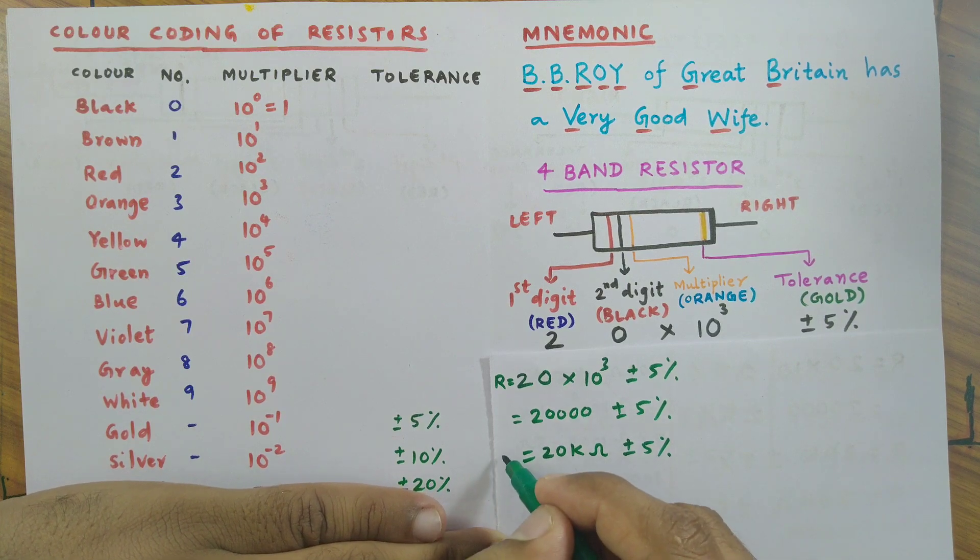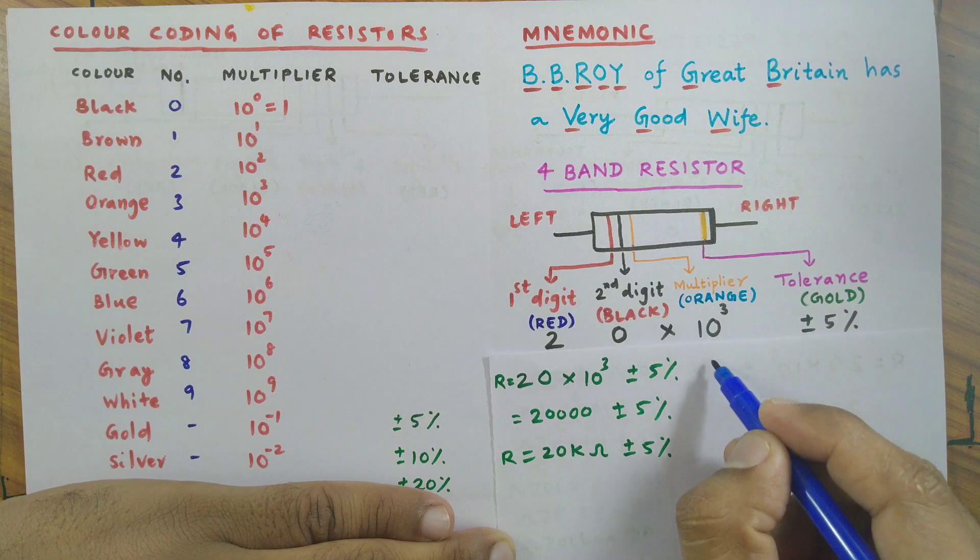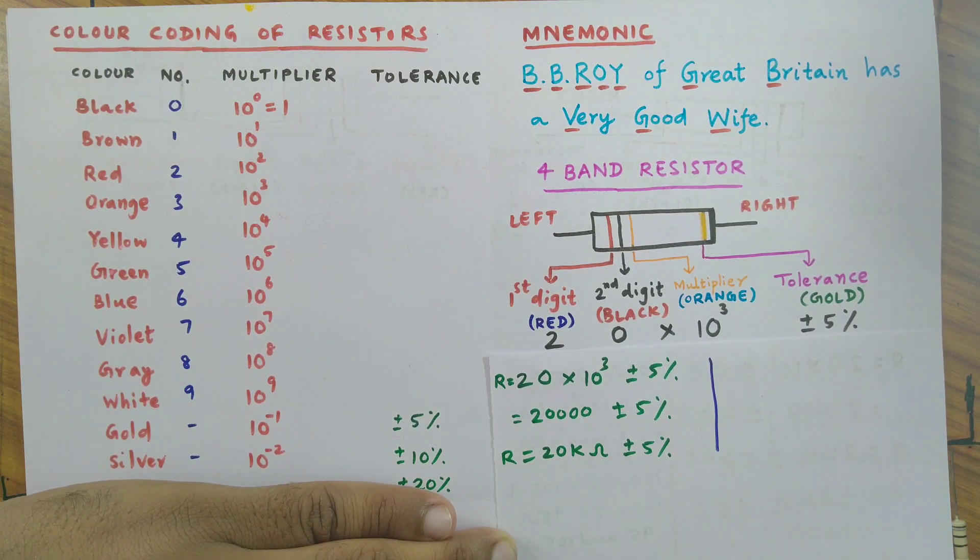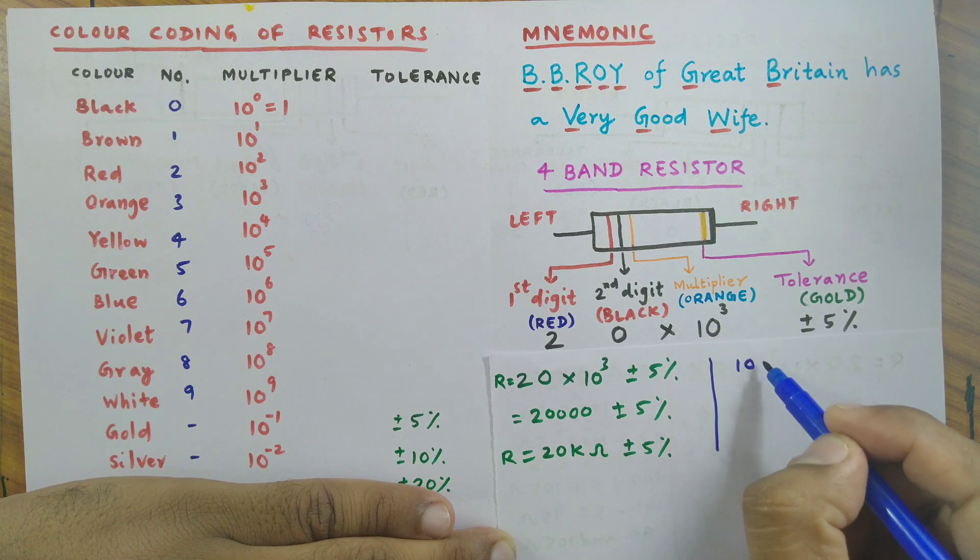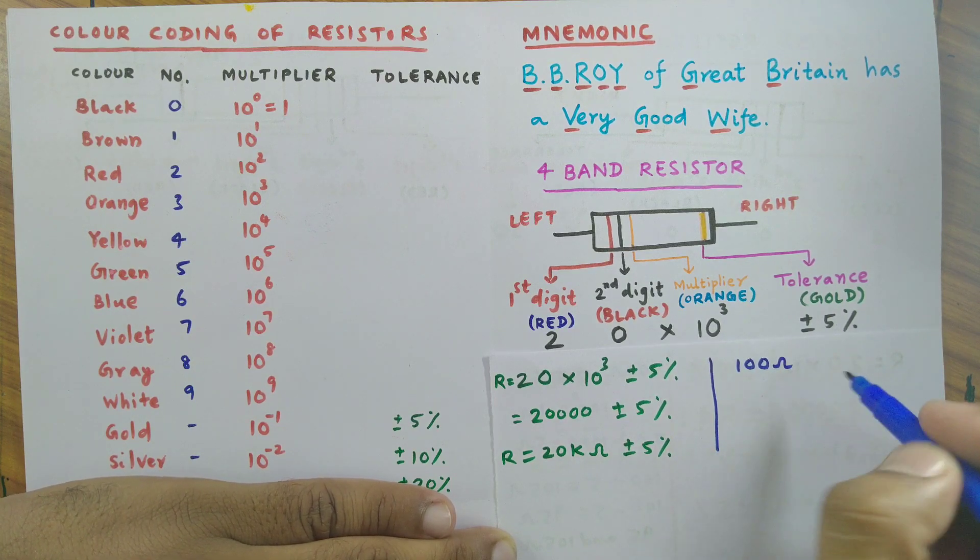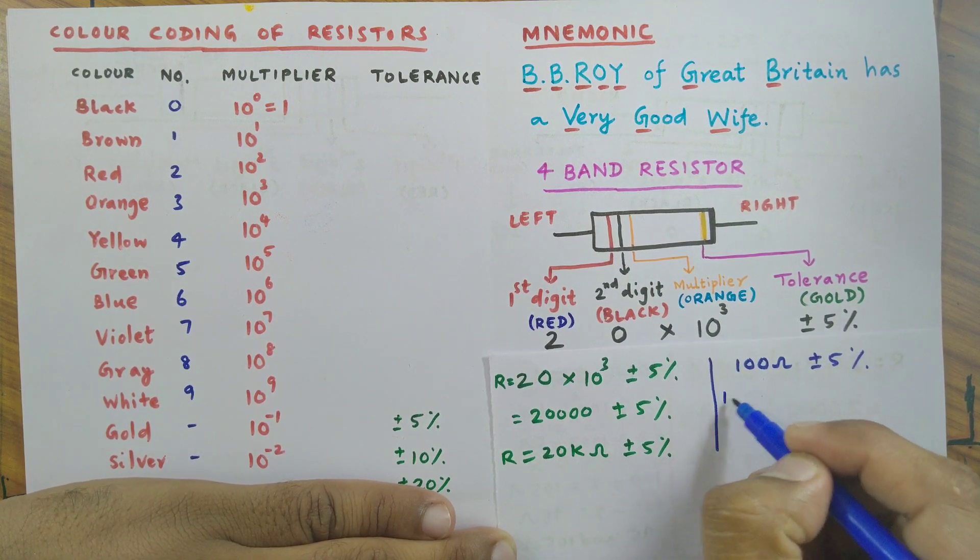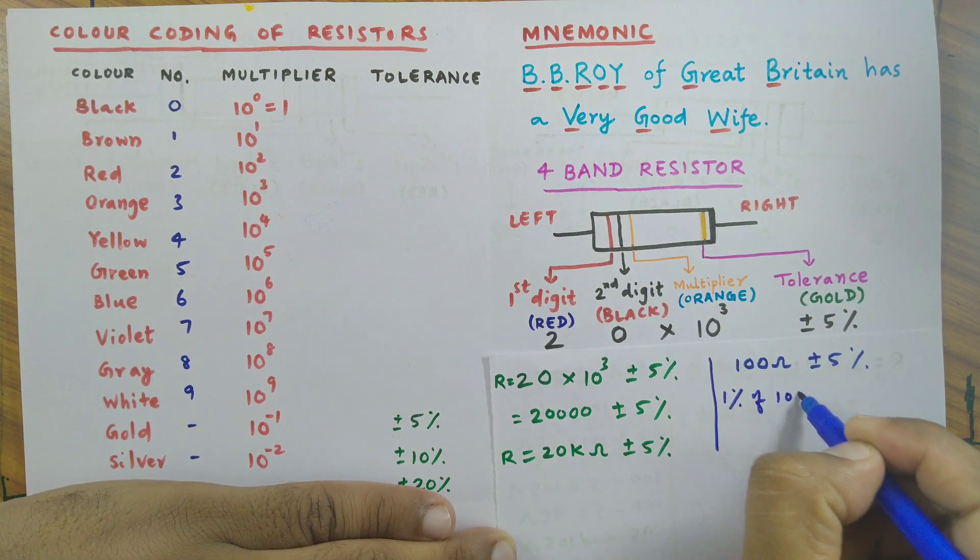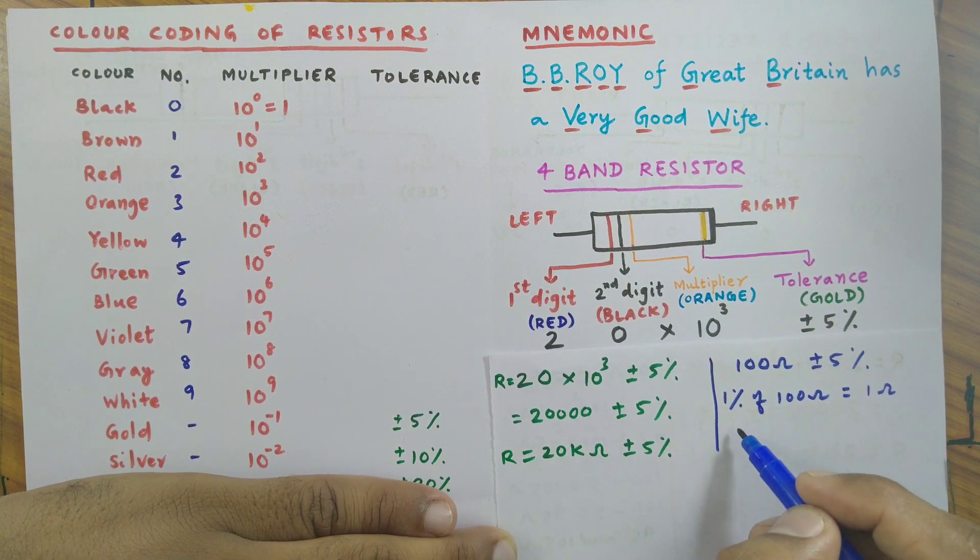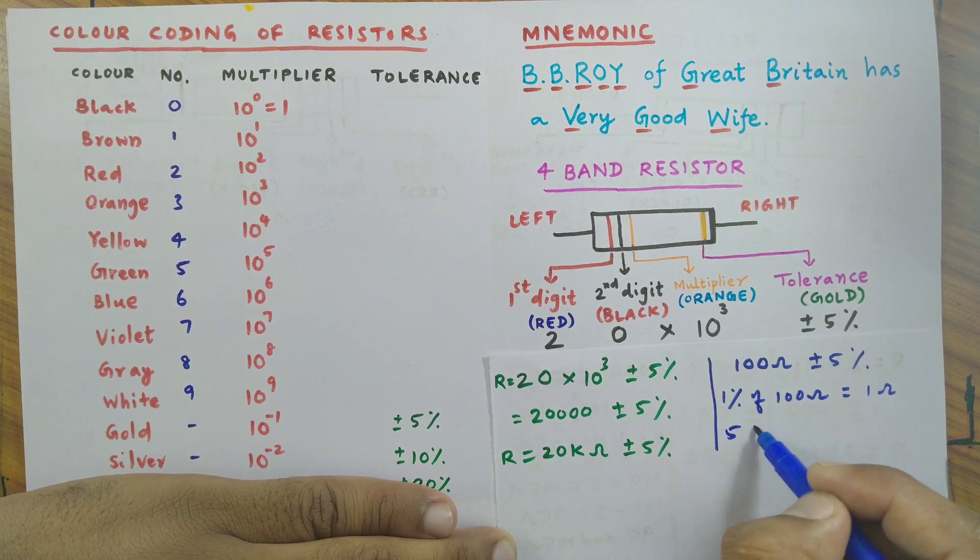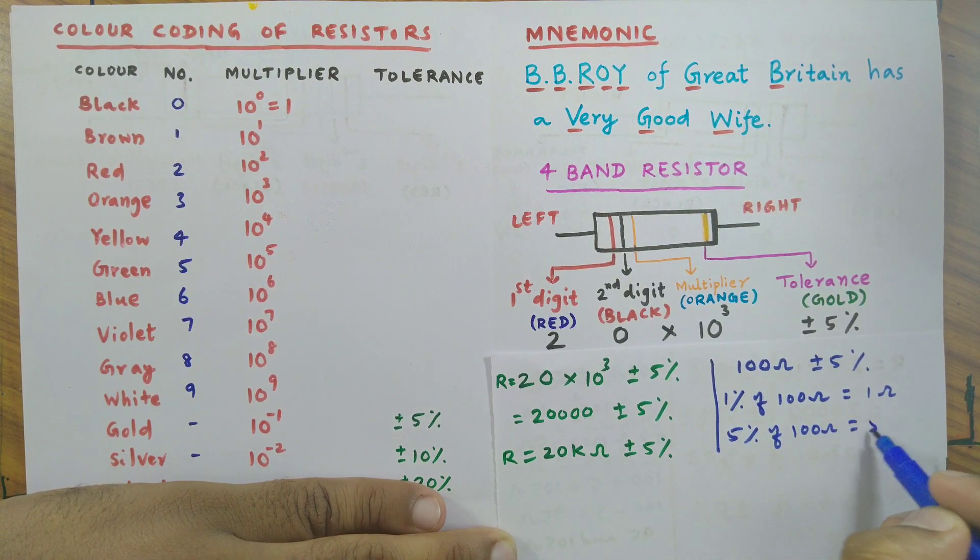What does this tolerance represent? Let me tell you. Suppose you have a resistor of resistance 100 ohm and its tolerance is plus or minus five percent. Then one percent of 100 ohm will be one ohm, so five percent of 100 ohm is equal to five ohm.